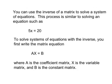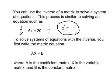You can use the inverse of a matrix to solve a system of equations. This is similar to solving a scalar equation: if 5x equals 20, we multiply both sides by one-fifth — the inverse of 5 — to get x equals 4. Similarly, to solve a system using matrix inverses, we write the matrix equation AX equals B, where A is the coefficient matrix, X is the variable matrix, and B is the constant matrix.